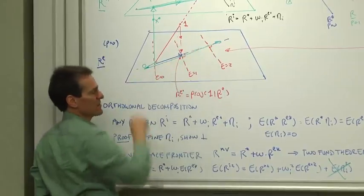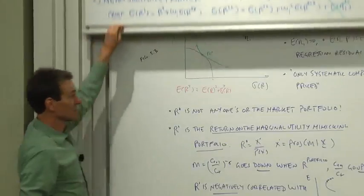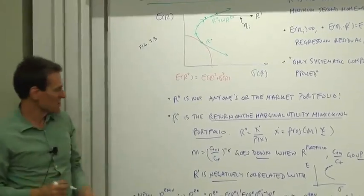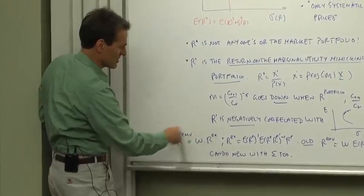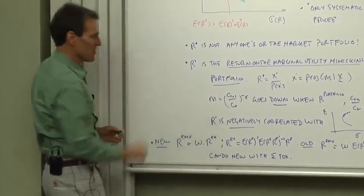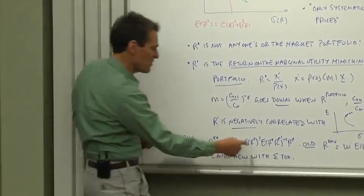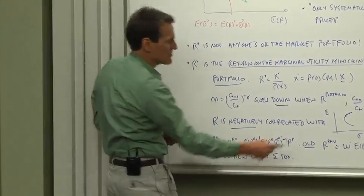So how does that compare the mean variance frontier of excess returns? It's just W times R star. R star was a mean, a second moment matrix times R.